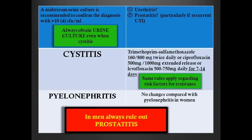For cystitis in men, the same resistance rules apply: more than 20% resistance to Bactrim for E. coli means you should not use it empirically — but in this case you will have a urine culture because you should order one from the beginning. Bactrim double-strength twice daily, ciprofloxacin 500 mg Q12 or extended-release, or levofloxacin once daily are options, with the same risk-factor rules for resistance. For pyelonephritis, the same rules apply as for women. The most important concept is always rule out prostatitis. If you have a urinary infection in men, ask about sexual practices — especially anal intercourse or lack of circumcision — or consider if the patient is over 65 with prostatic problems.